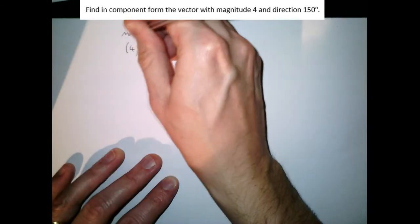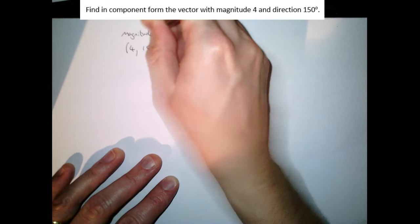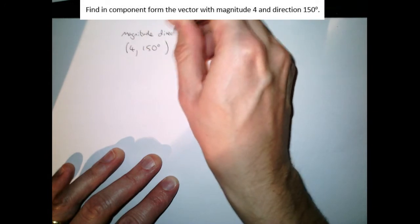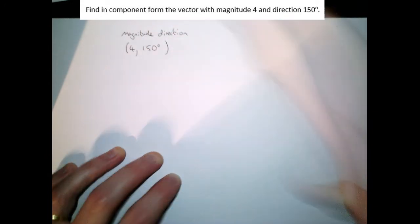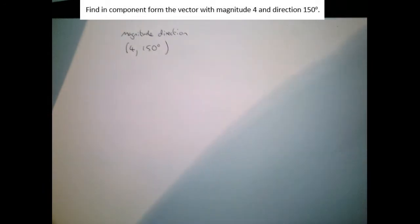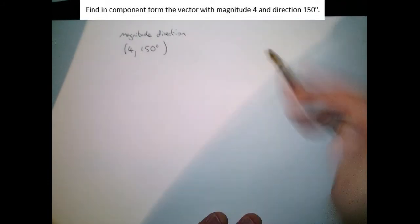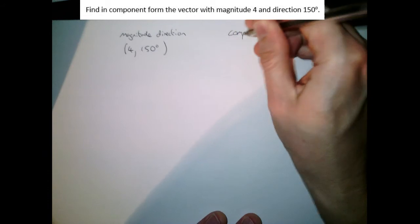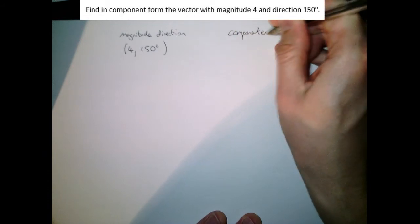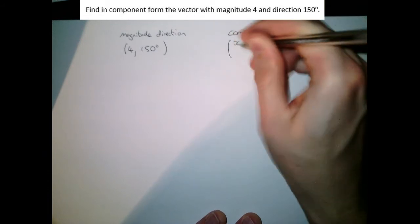We call that magnitude-direction form. For those of you who do some further maths work with complex numbers, you may remember the modulus-argument form is the same kind of idea there. And we want to write in component form, when we write component form of a vector what we mean by that is writing either as a column vector.